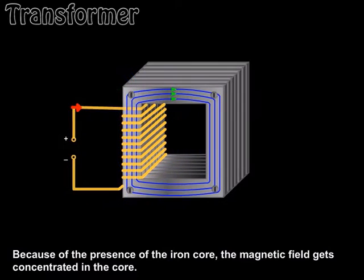Because of the presence of the iron core, the magnetic field gets concentrated in the core.